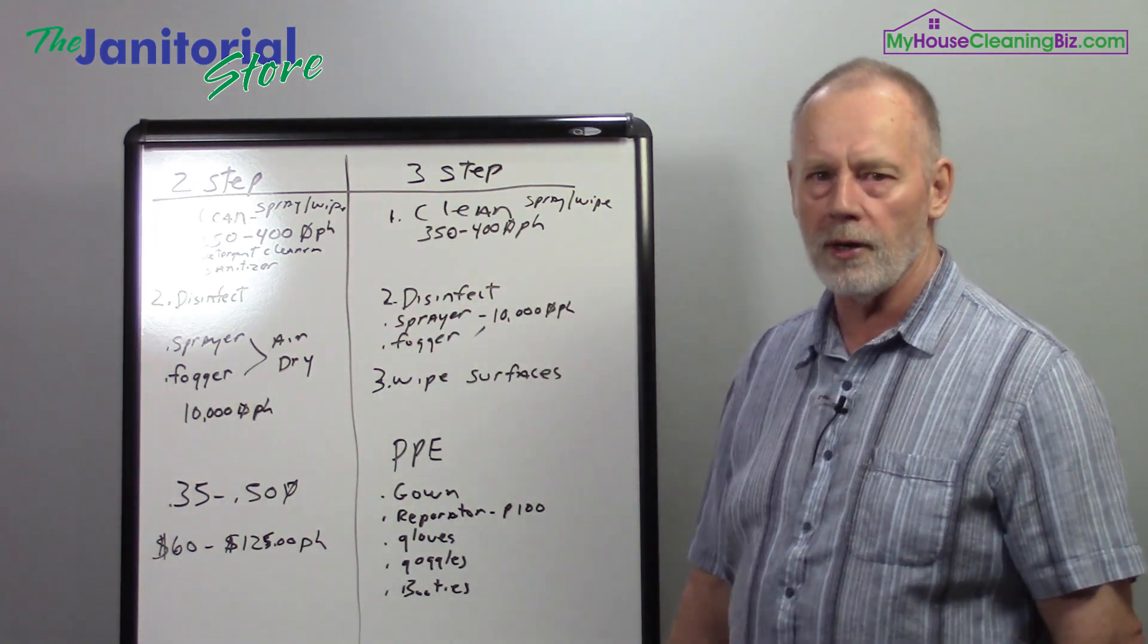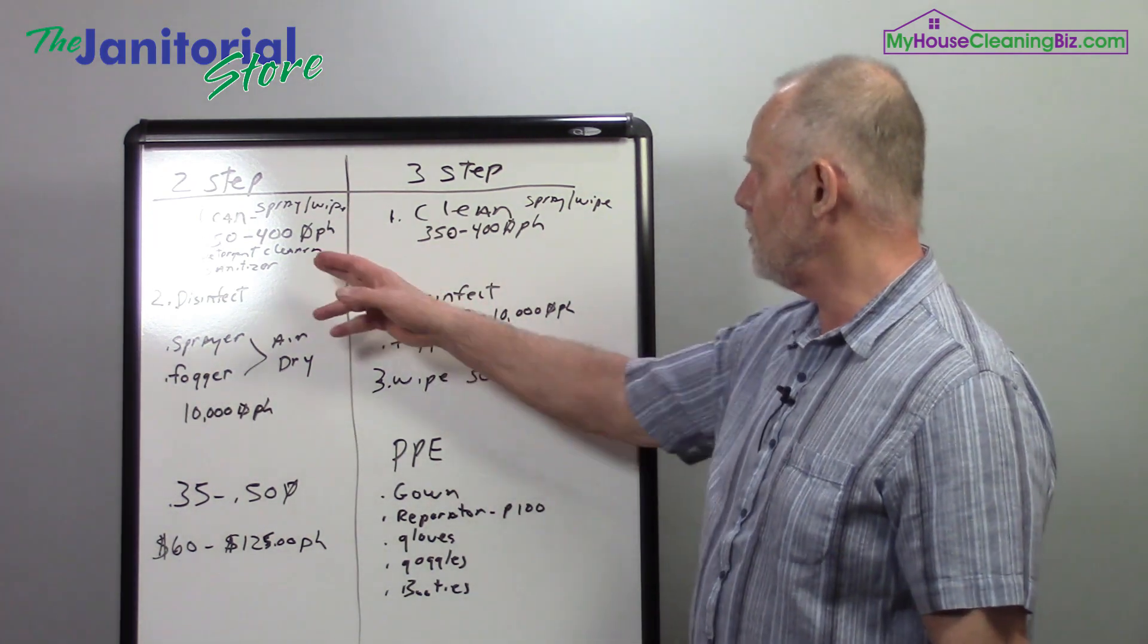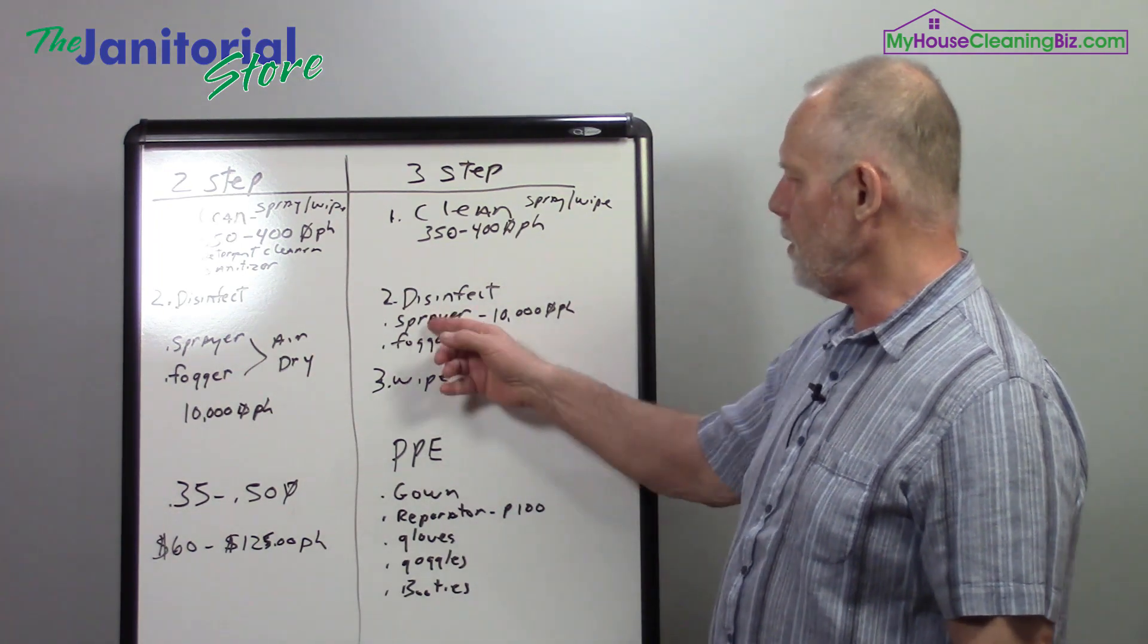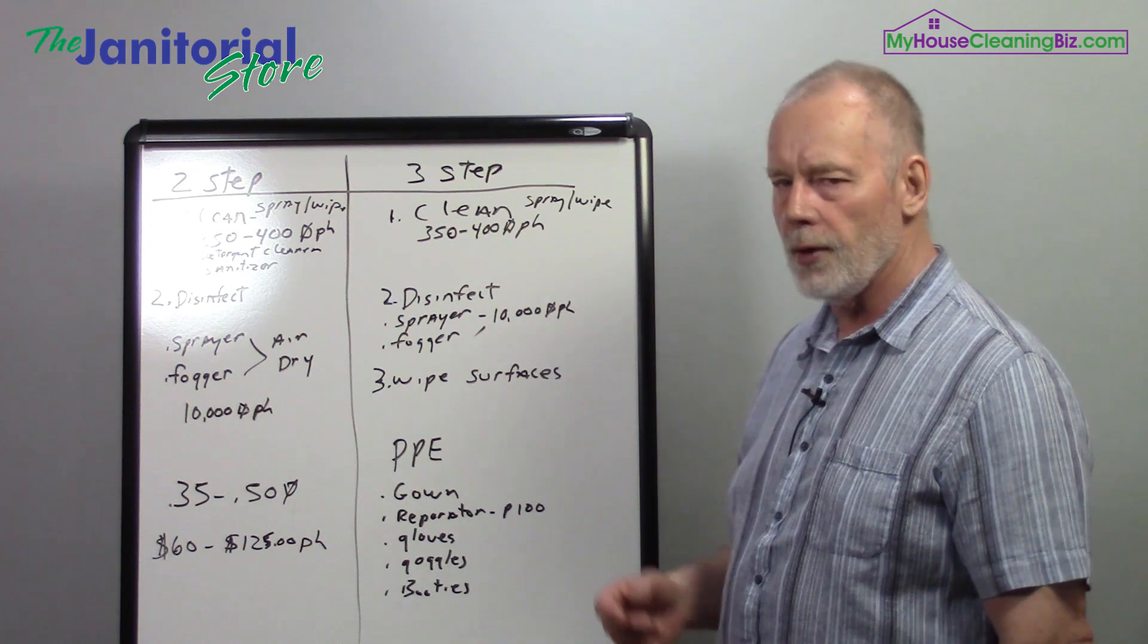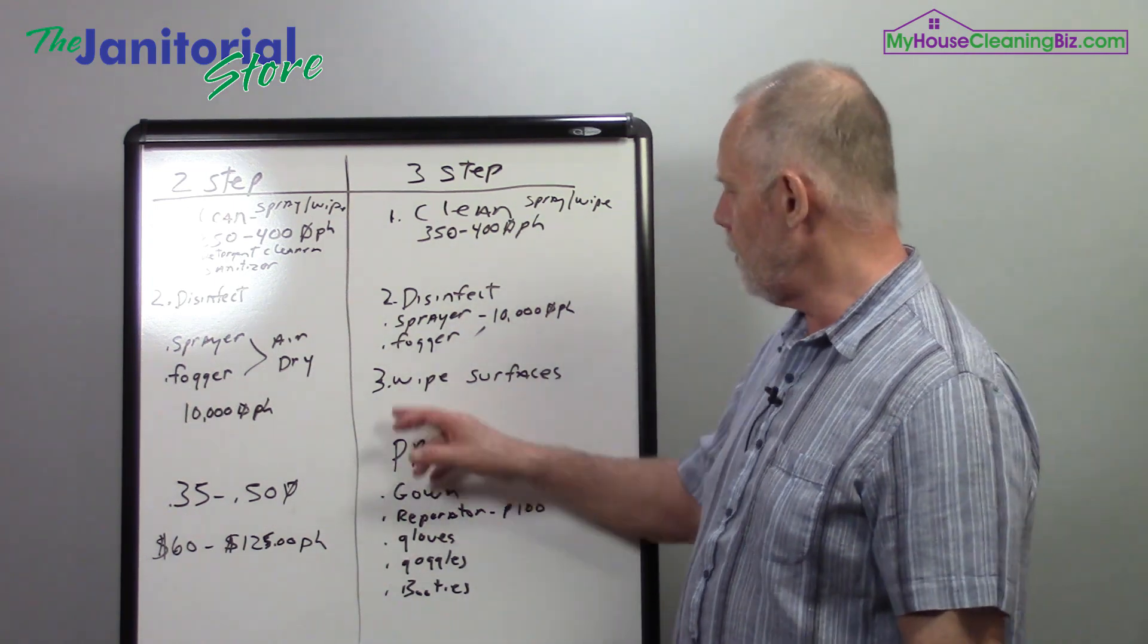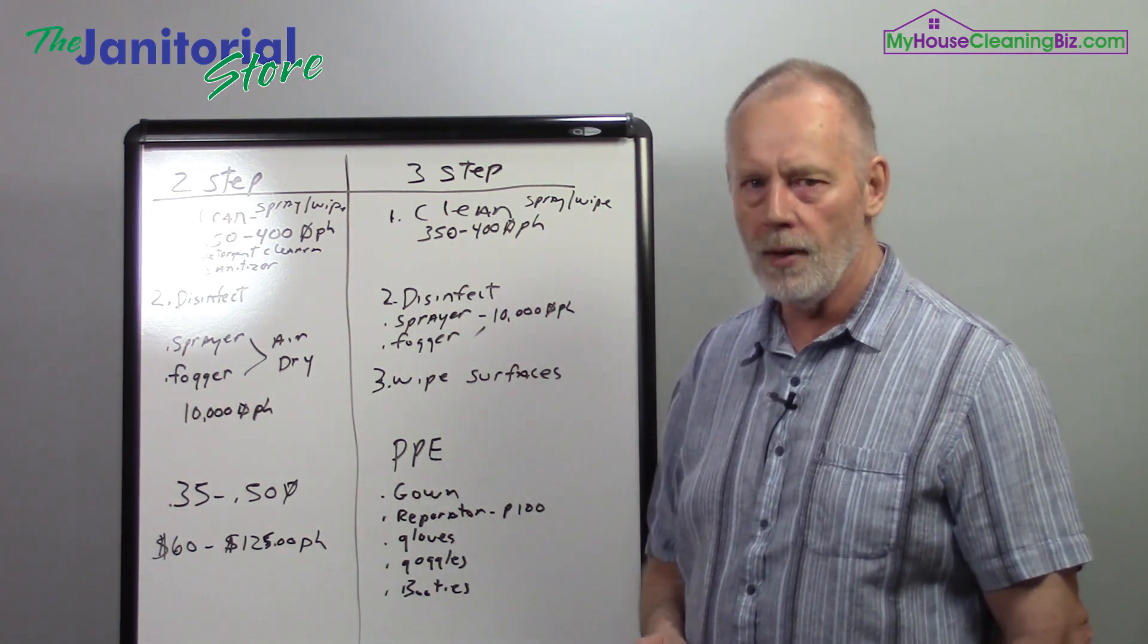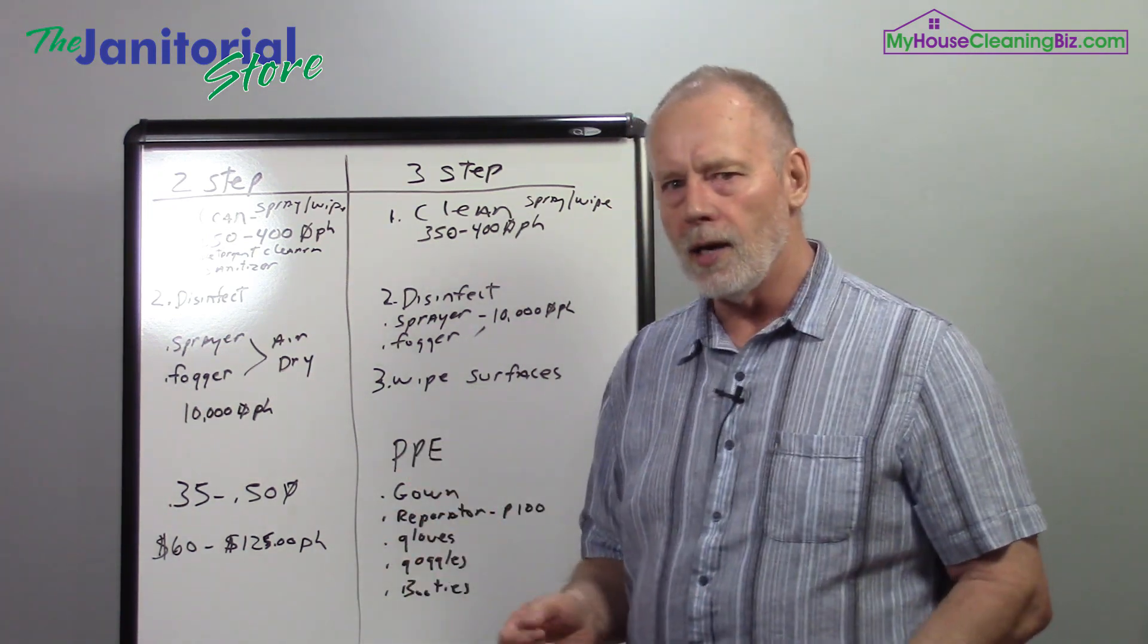Another team member is going to come through and they're going to disinfect just as I said in the two-step. They're going to either use the electrostatic sprayer or fogger. And then the third step is where a team member would come through and wipe all the surfaces dry. So that would be a three-step process.